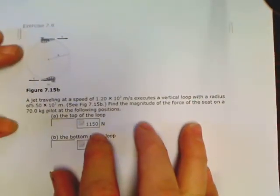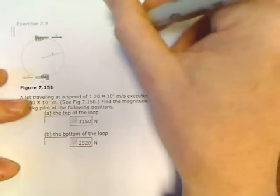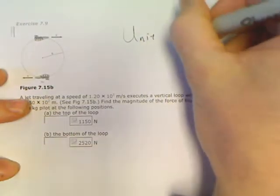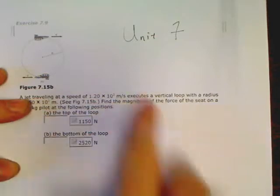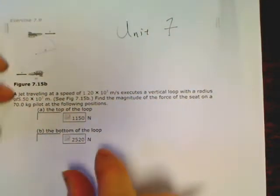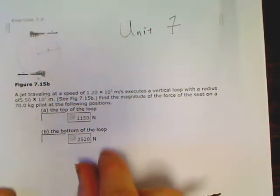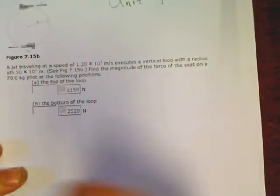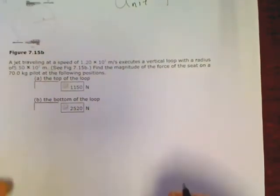Greetings. This is my final video on chapter 7, unit 7, things going in circles. This problem is about a plane doing a loop-de-loop. This works out great. We've already talked about something going in circles.